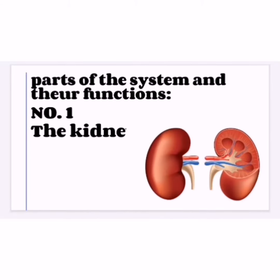Parts of the system and their functions. Number one: the kidneys. There are two organs that produce urine to eliminate waste substances.